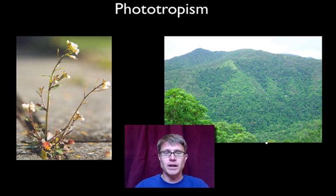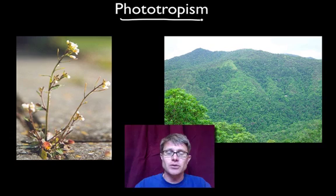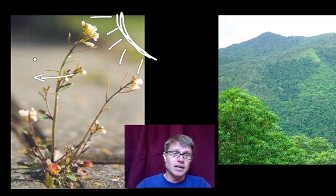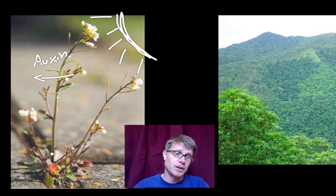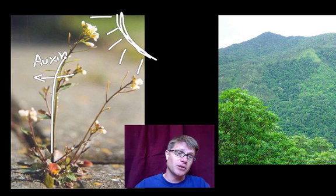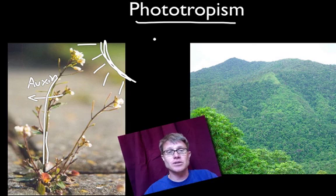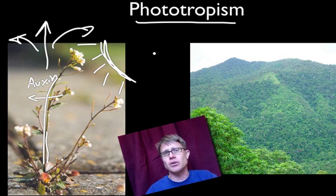Let's start with phototropism. Phototropism is growing in response to light. If the light is over here — you can actually see it in this picture — what happens in a plant is the auxin moves away from the light. That makes the cells on the shaded side of the plant grow faster than the cells on the lit side, so it bends toward the light. Phototropism is growth towards light — it could be growth straight up or at an angle. All of this is phototropism.